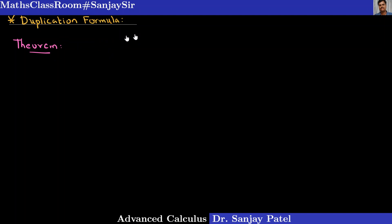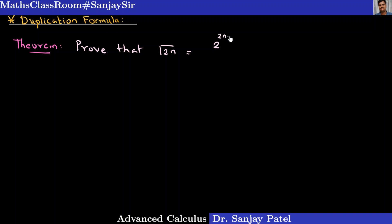Prove that gamma of 2n is equal to 2 raised to 2n minus 1, upon square root of pi, into gamma n, into gamma of n plus 1 by 2. So let us prove this.